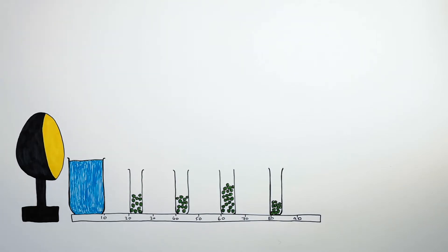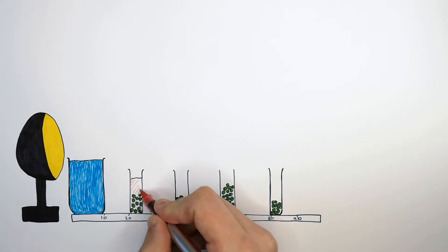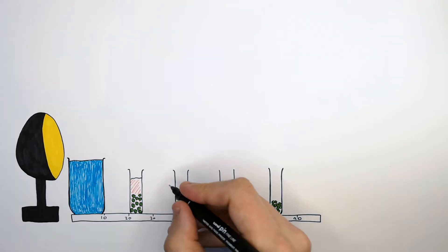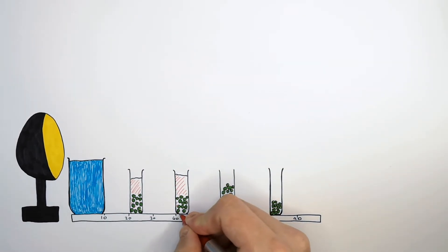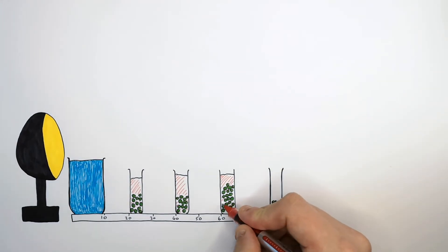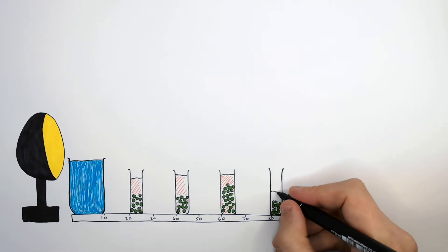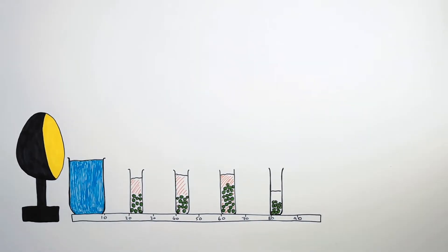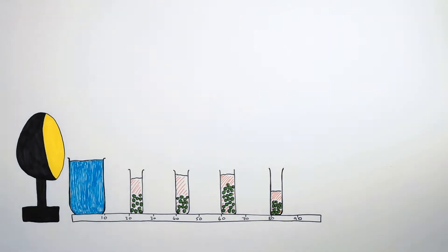We now need to add the same volume of hydrogen carbonate indicator into each flask — it must be the same volume, as this is a control variable to make your results reliable. The same volume of hydrogen carbonate indicator is added to the first three flasks. In the fourth flask, the student makes a mistake and adds less volume of hydrogen carbonate indicator, which could mean the results are not comparable. Then you put the lids on the flasks.